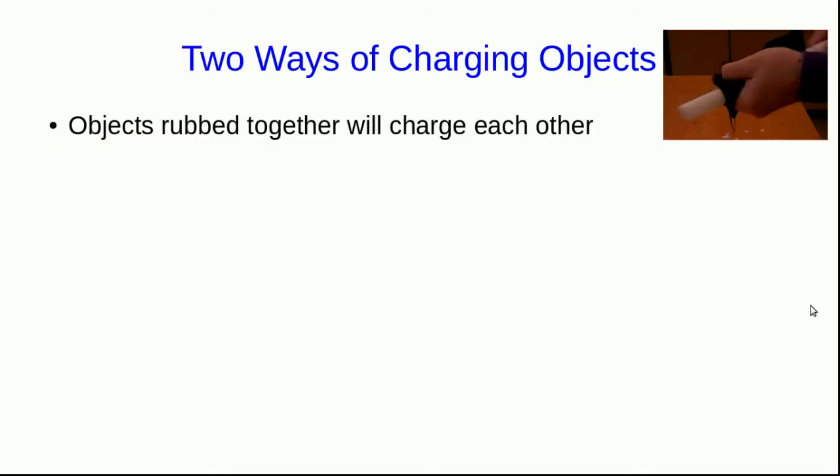We've already seen some ways of charging objects. When two objects are rubbed together they'll often charge each other. For example, we've seen this with a piece of plastic rubbed with a piece of wool, and one thing to notice is that we always need to rub together two objects made of different materials.